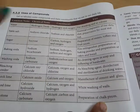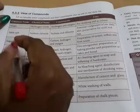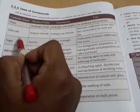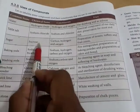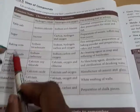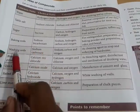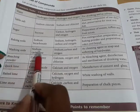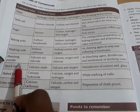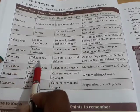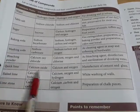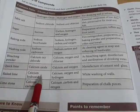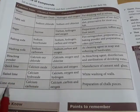Now we will see the uses of compounds. Water is a compound. Table salt is sodium chloride (NaCl). Sugar contains sucrose. Baking soda contains sodium bicarbonate. Washing soda contains sodium carbonate. Bleaching powder contains calcium oxychloride. Quicklime contains calcium oxide. Slaked lime contains calcium hydroxide. Limestone contains calcium carbonate.